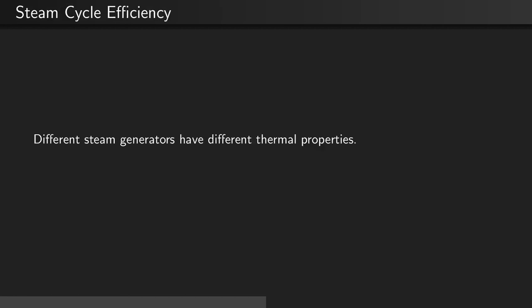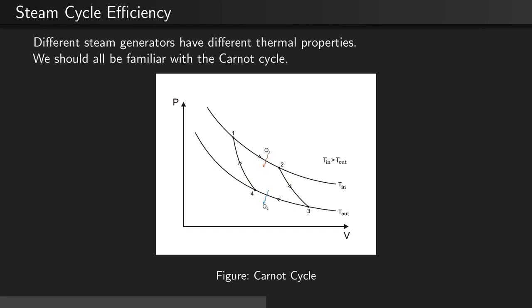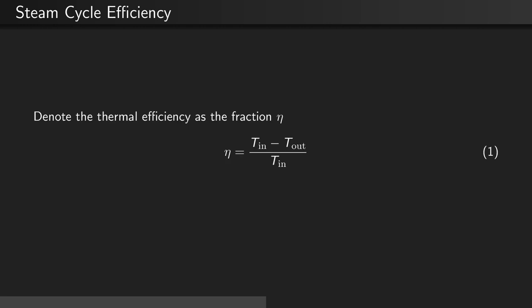Meanwhile, different steam generators have different thermal properties. From chemistry, we should all be familiar with the Carnot cycle, as seen in this figure here. Denote the thermal efficiency as the fraction eta, such that eta equals (T_in - T_out) / T_in. Both the inlet and outlet temperatures are measured in Kelvin.